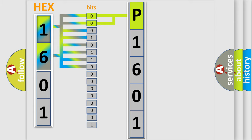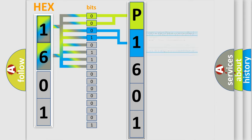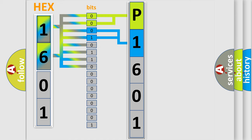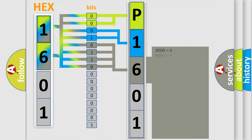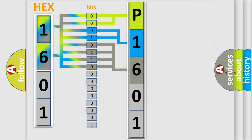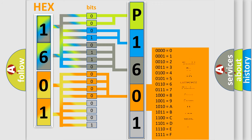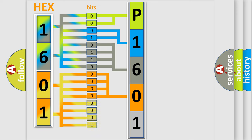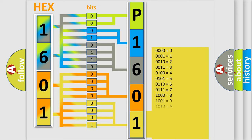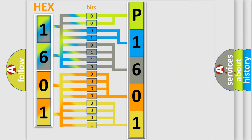The next two bits again determine the second character. The last bits of the first byte define the third character of the code. The second byte is composed of a combination of eight bits. The first four bits determine the fourth character of the code, and the combination of the last four bits defines the fifth character. A single byte conceals 256 possible combinations.